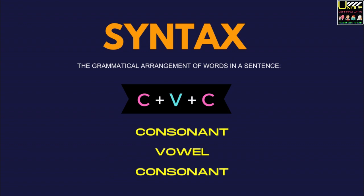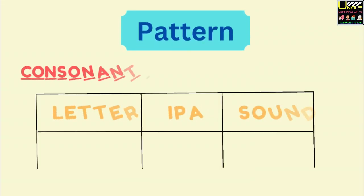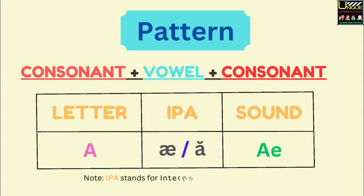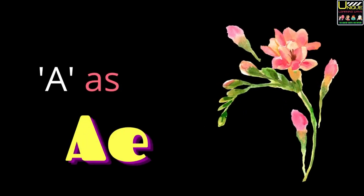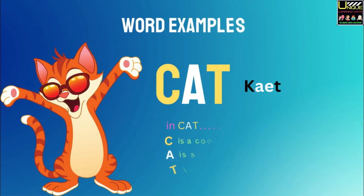The CVC — Consonant, Vowel, Consonant — pattern. Note: IPA stands for International Phonetic Alphabet. Letter A, sound /æ/. Word examples.